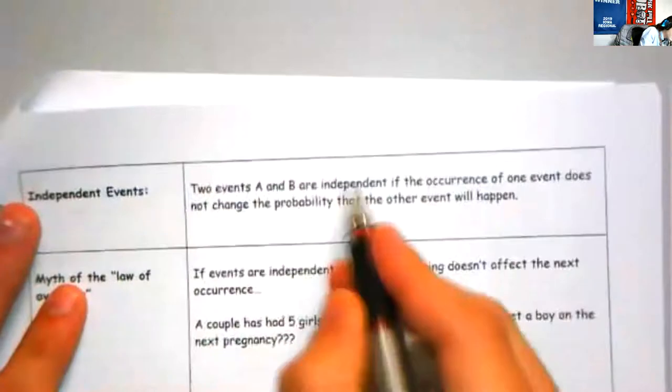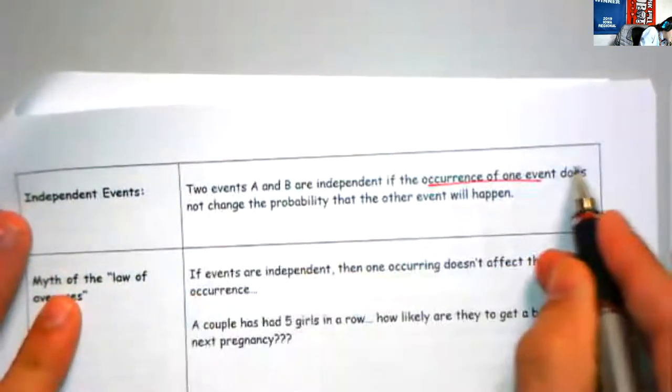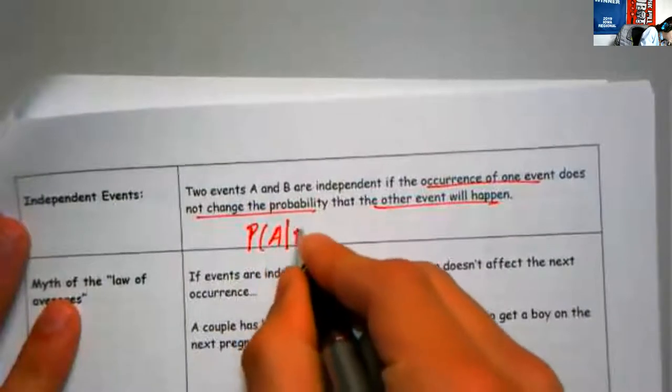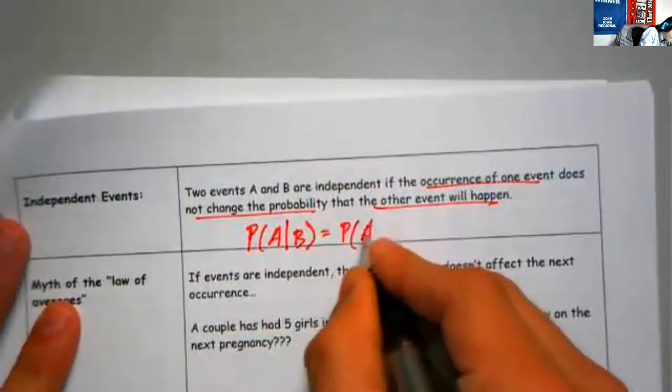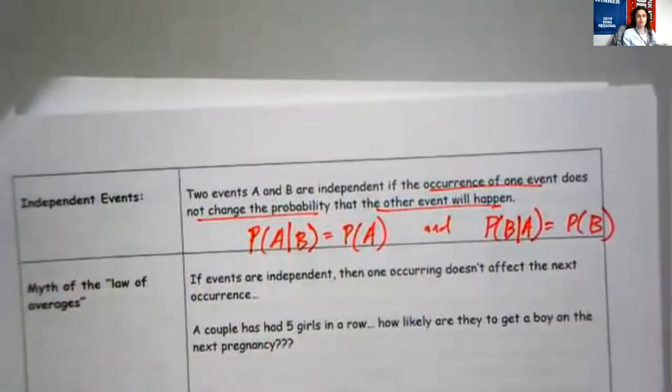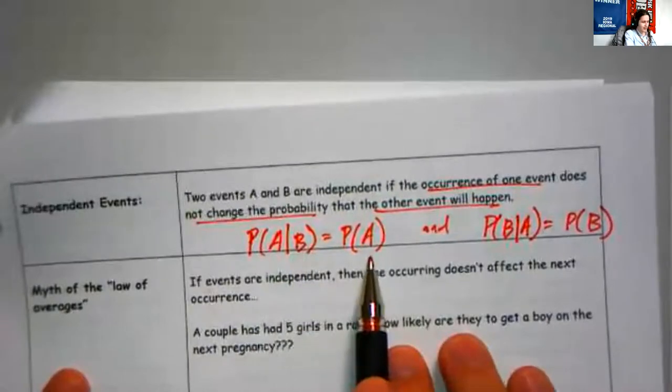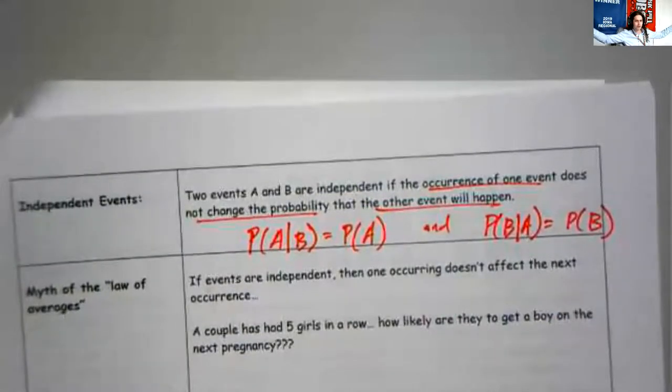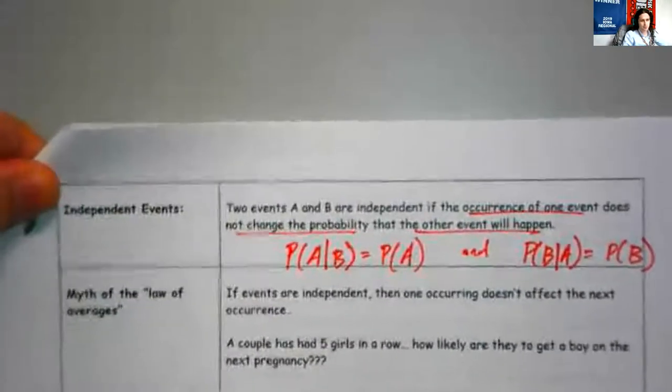Few more definitions for you. Again, this is going to be a quick section of notes. Independent events. We'll talk more about independent events later with probabilistic formulas. But two events are independent if the occurrence of one does not change the probability that the other will happen. In symbols, we're going to write that as the probability of A given B is the probability of A. And the probability of B given A equals the probability of B. The idea is that this B thing happening doesn't affect the chance of A happening. And this A thing happening doesn't affect the chance of B thing happening. They are independent. One thing has nothing to do with the other.